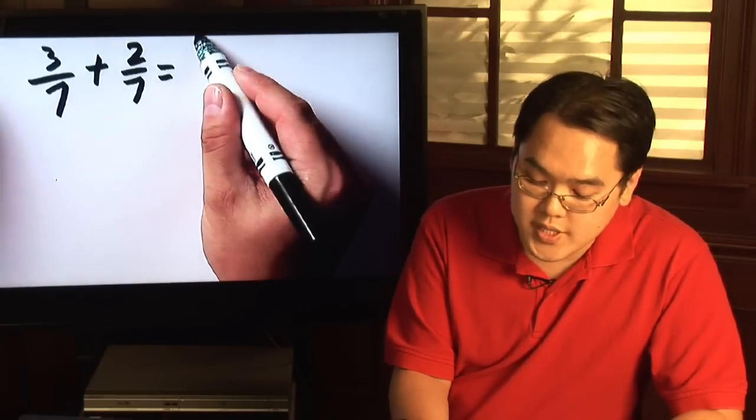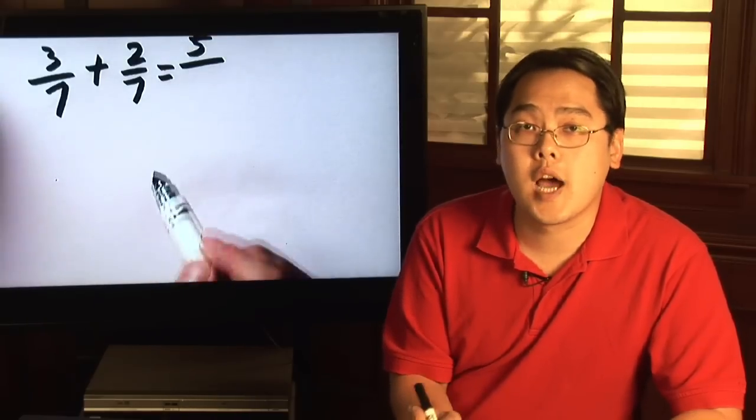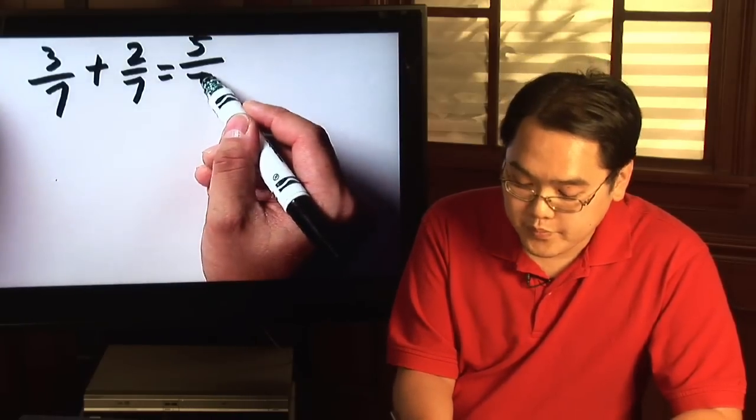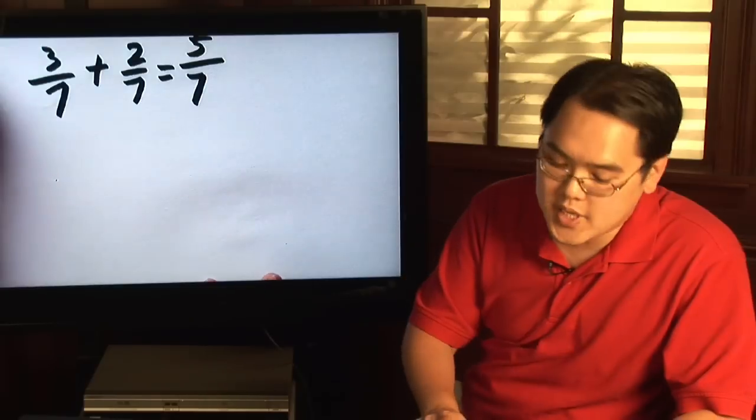So three plus two is five, but don't make the mistake of adding the denominators as well. The denominators stay the same. So three sevenths plus two sevenths is five sevenths.